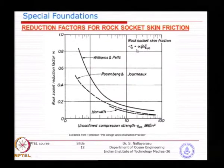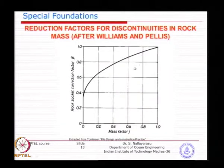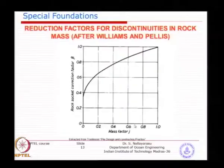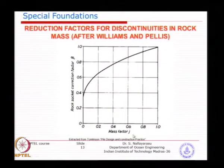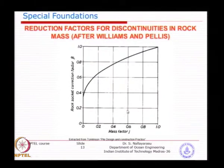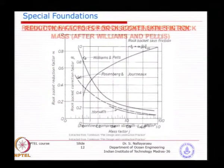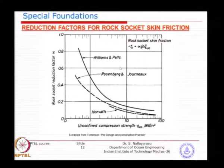When finding the skin friction in the socketed portion of the pile in rock, similar to our alpha method, there is a modification factor called beta. The skin friction is alpha times the unconfined compressive strength, multiplied by a rock socket correction factor with respect to the mass factor of the rock itself. This relates to RQD — the rock quality designation — from which you get tabulated values of the mass factor, indicating how dense or fractured the rock is.